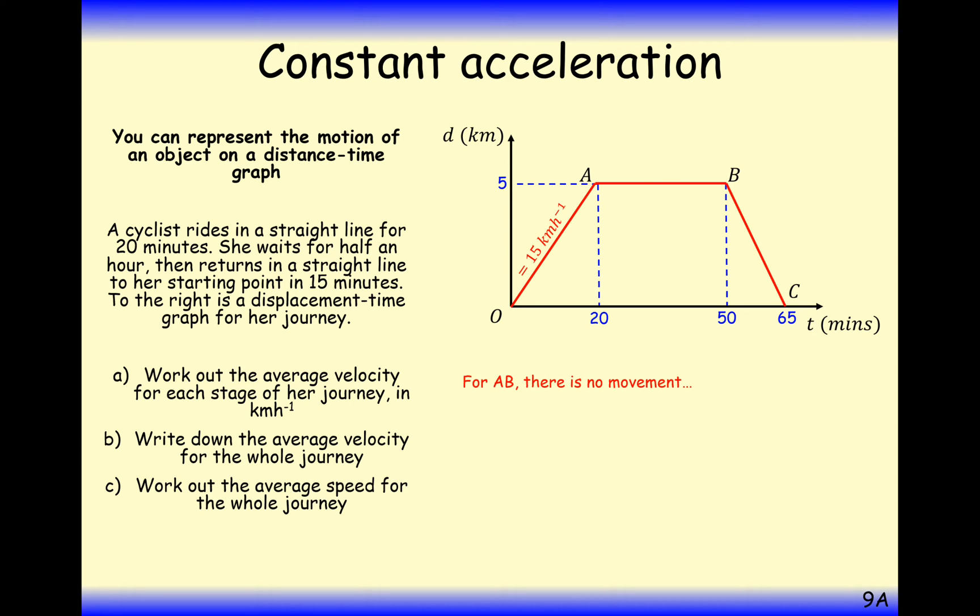The next part, from A to B, there's no movement, so that's zero kilometers per second. When we write kilometers per hour, you may be used to it like this. Think of it as kilometers per hour as a fraction. If you've got a fraction on the bottom, you can write this as h to the minus one, and that's how we write it in mechanics.